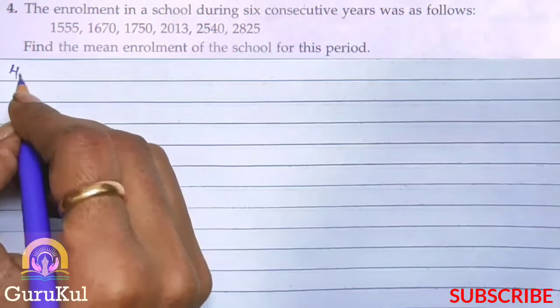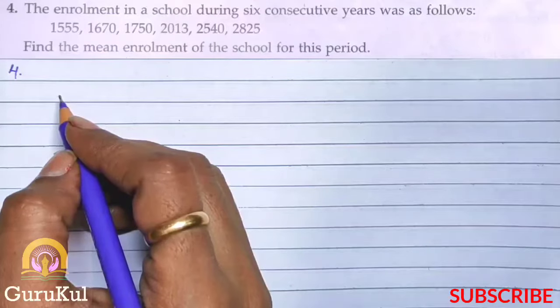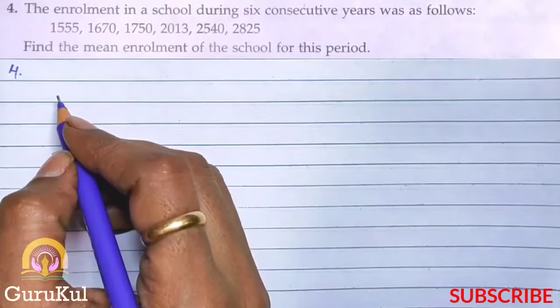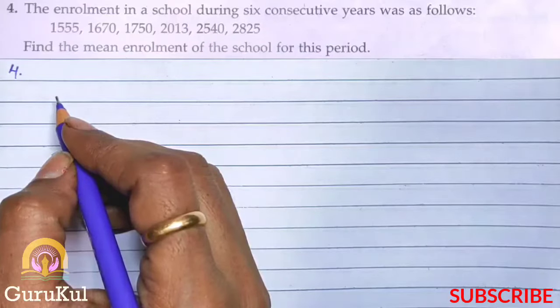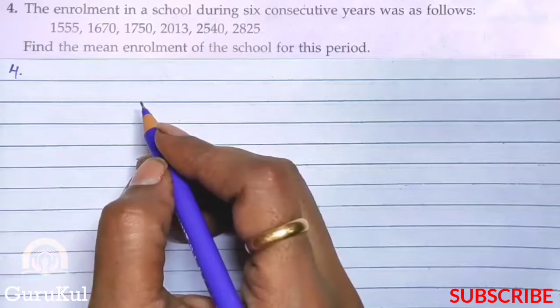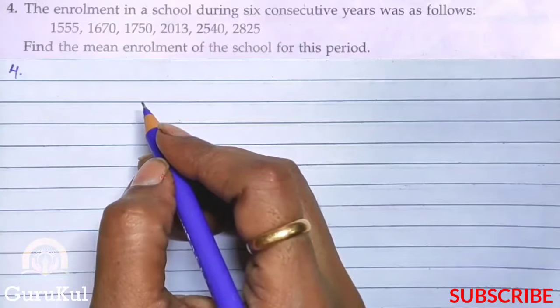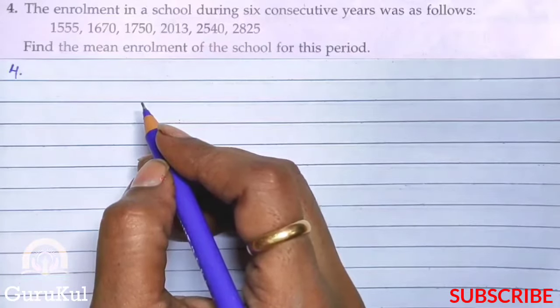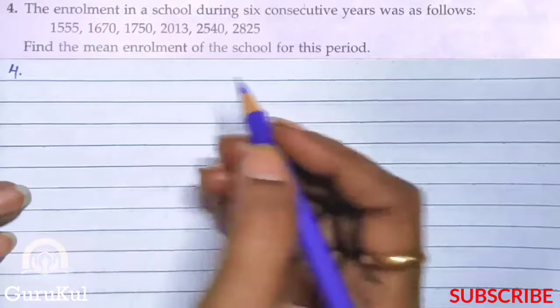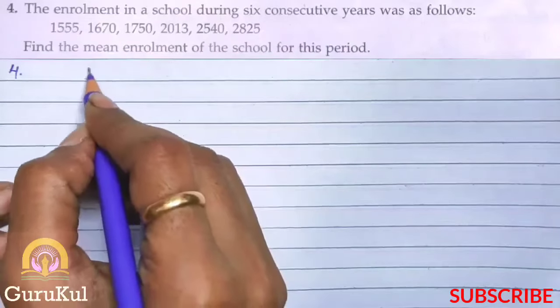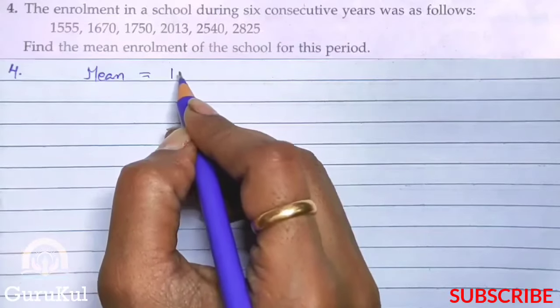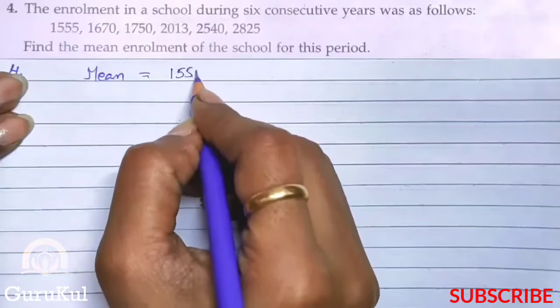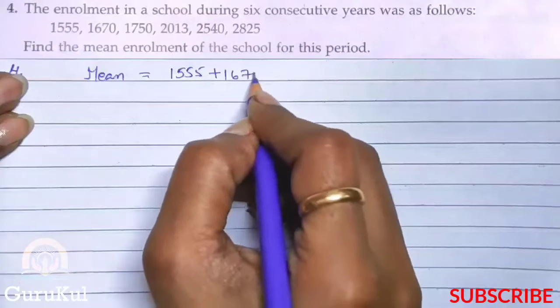Question number 4. The enrollment in a school during 6 consecutive years was as follows: 1555, 1670, 1750, 2013, 2540, 2825. Now we have to find the mean. The process is: add all observations.